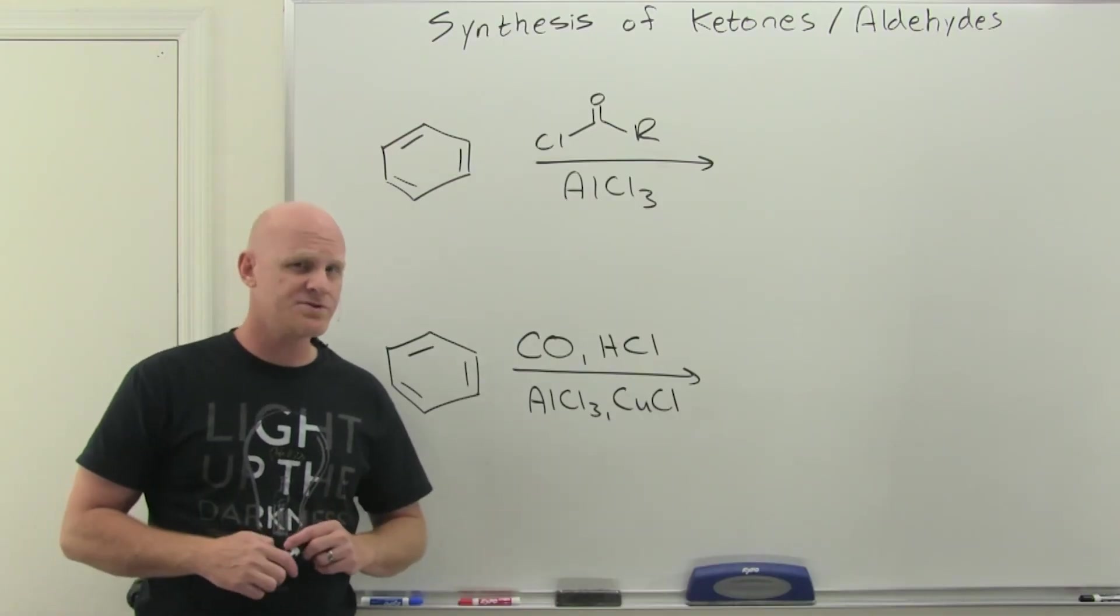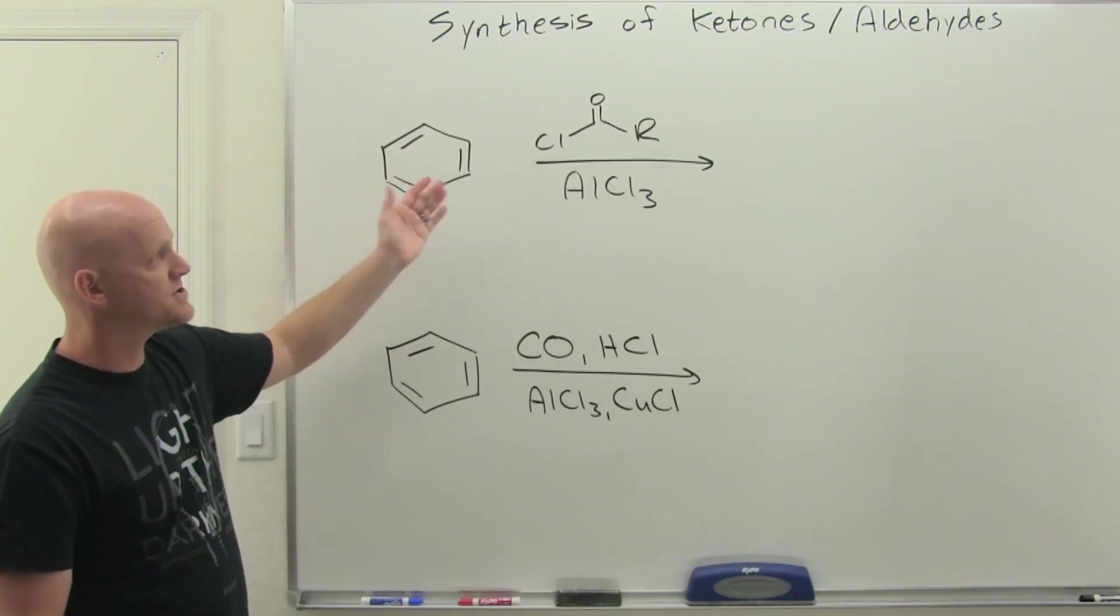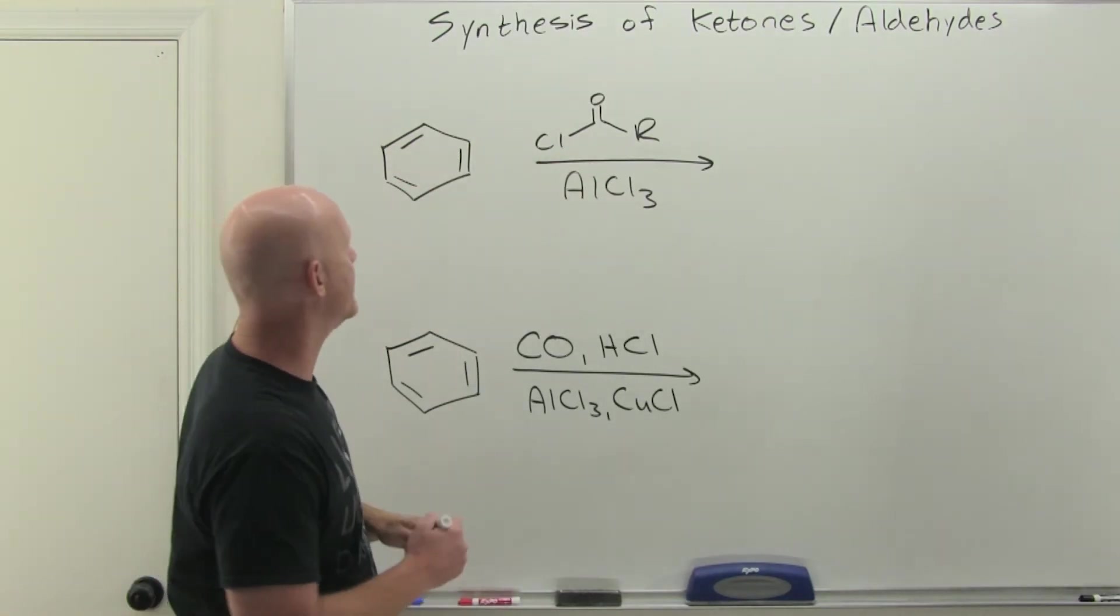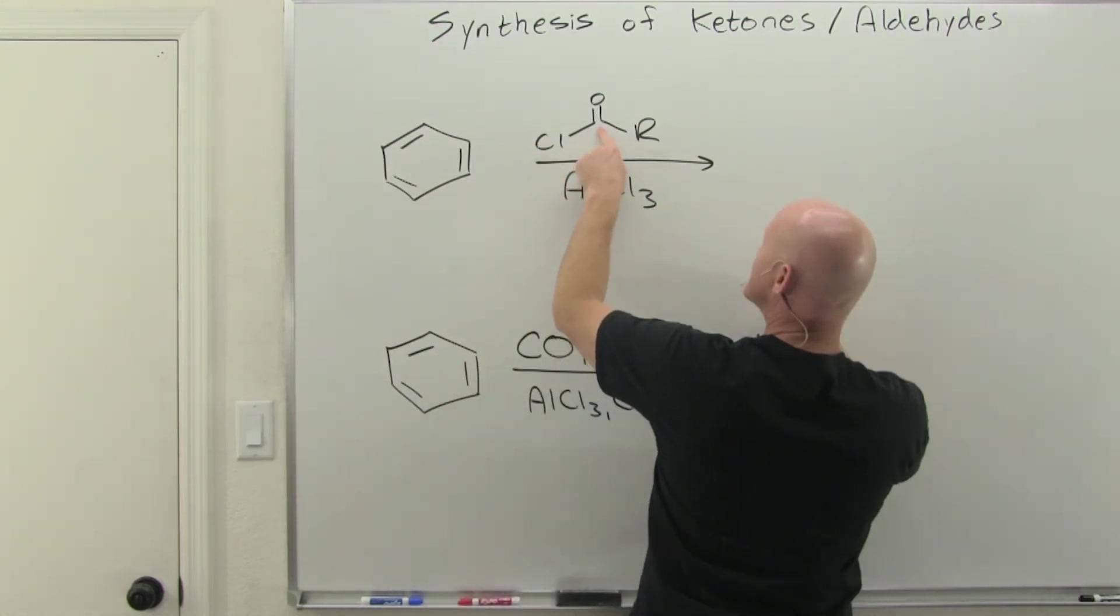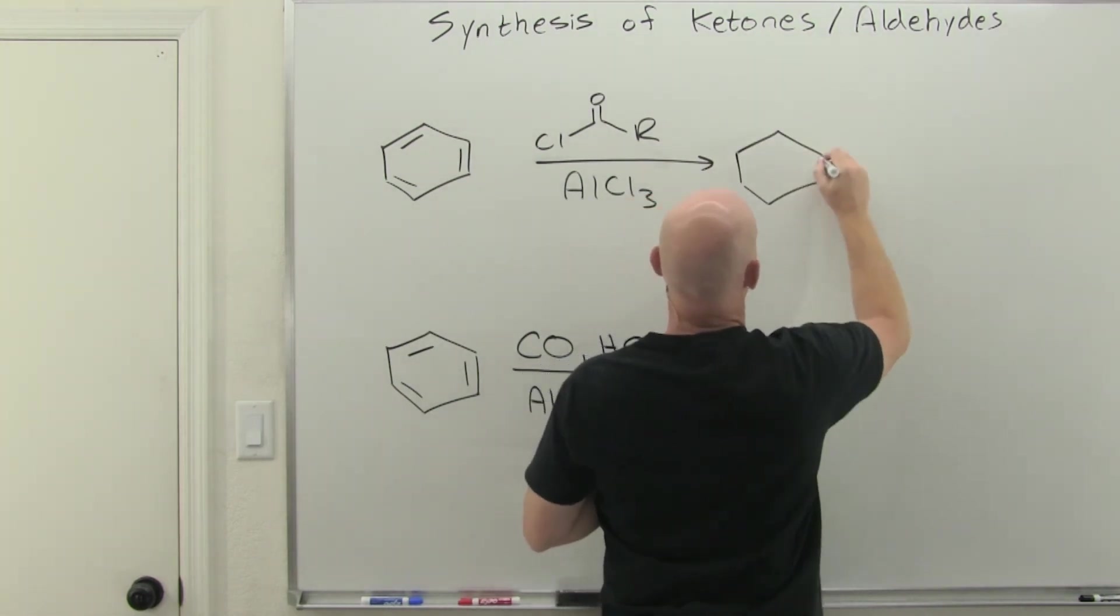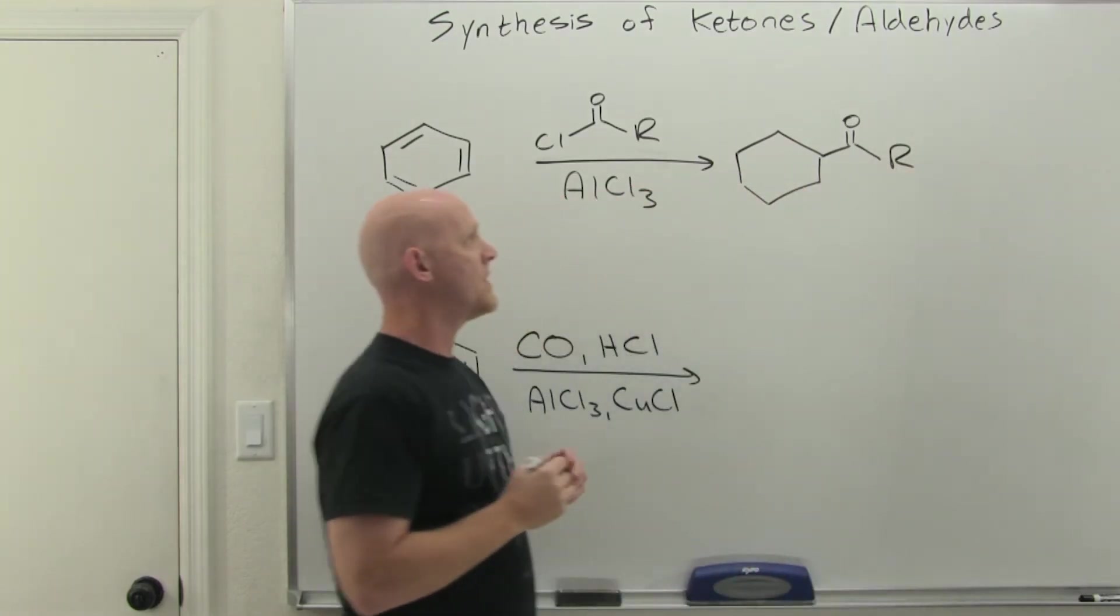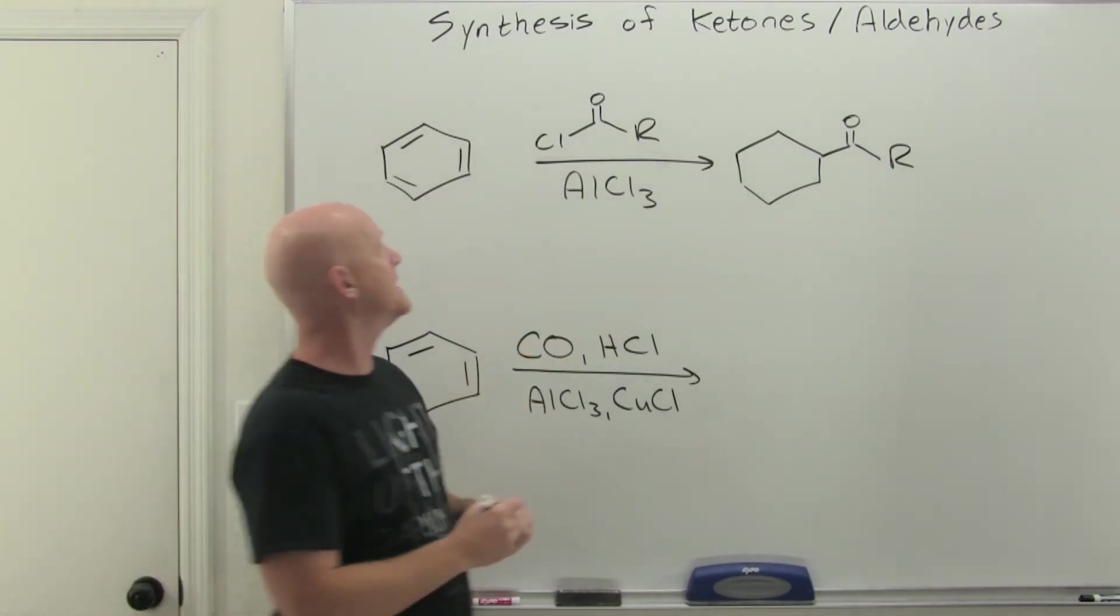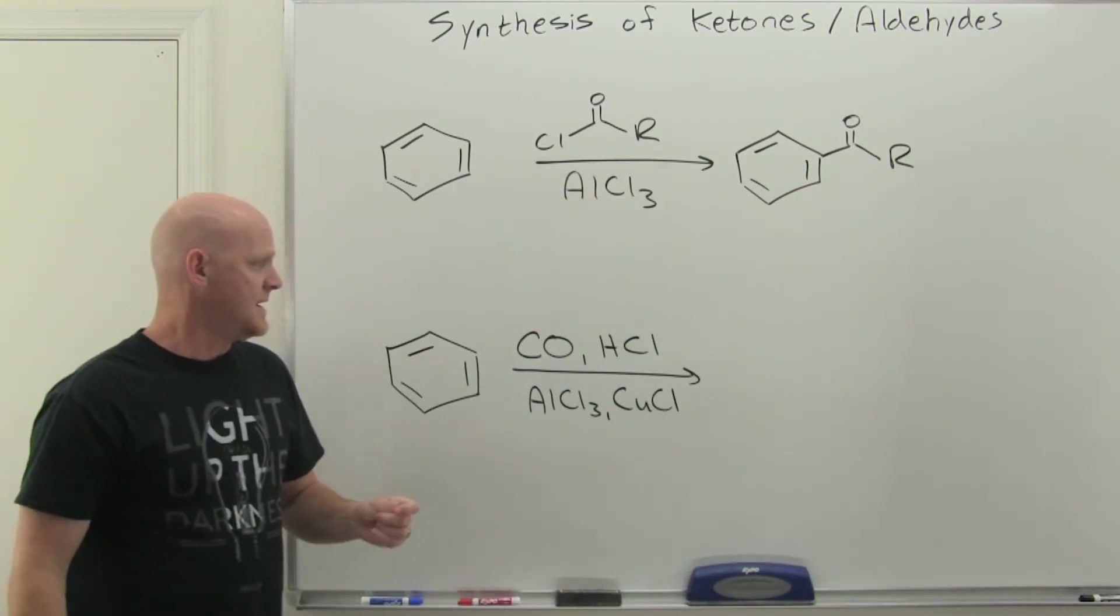So the last pair of reactions we're going to take a look at here for synthesizing ketones and aldehydes are first the Friedel-Crafts acylation. We'll use an acyl halide with our Lewis acid catalyst here, aluminum chloride. In this case, the aluminum chloride is going to pull off the chlorine, forming the acylium cation, which we'll then attack and do EAS with. And that R group is any kind of variable carbon chain, different length, substituted however, whatever we want. So we'll form a ketone here.